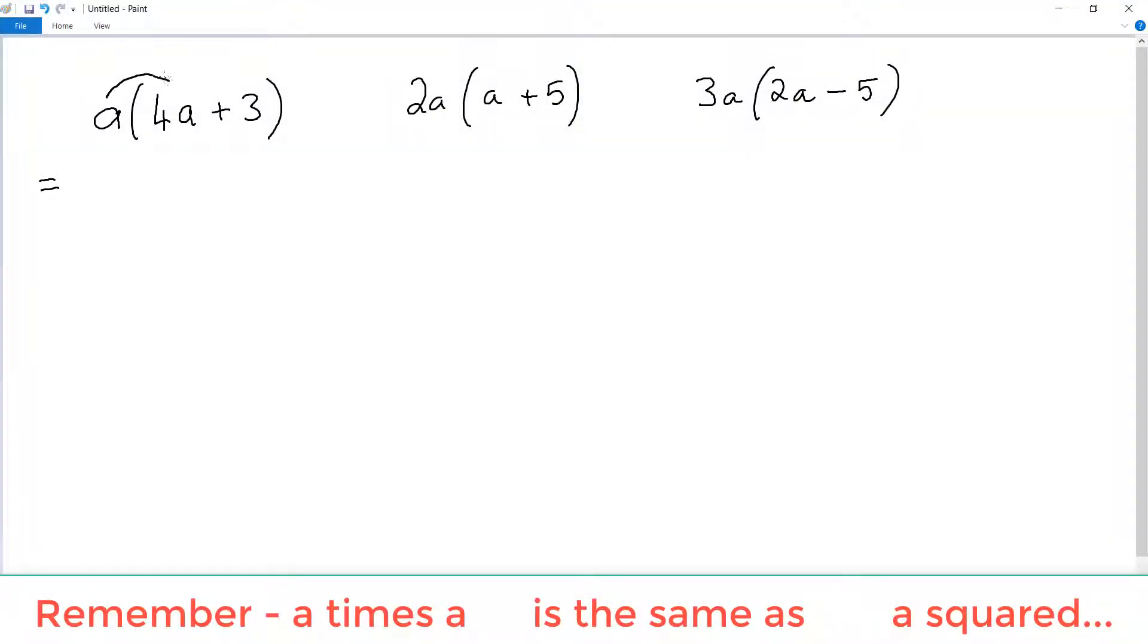Okay, so we're expanding where variables are on the outside. We're still multiplying the term in, so it's going to be the a multiplied by the 4a and the a multiplied by the 3. When we simplify this down, a times 4a becomes 4a squared and the a times 3 becomes 3a. Remember the convention to write the variable second.